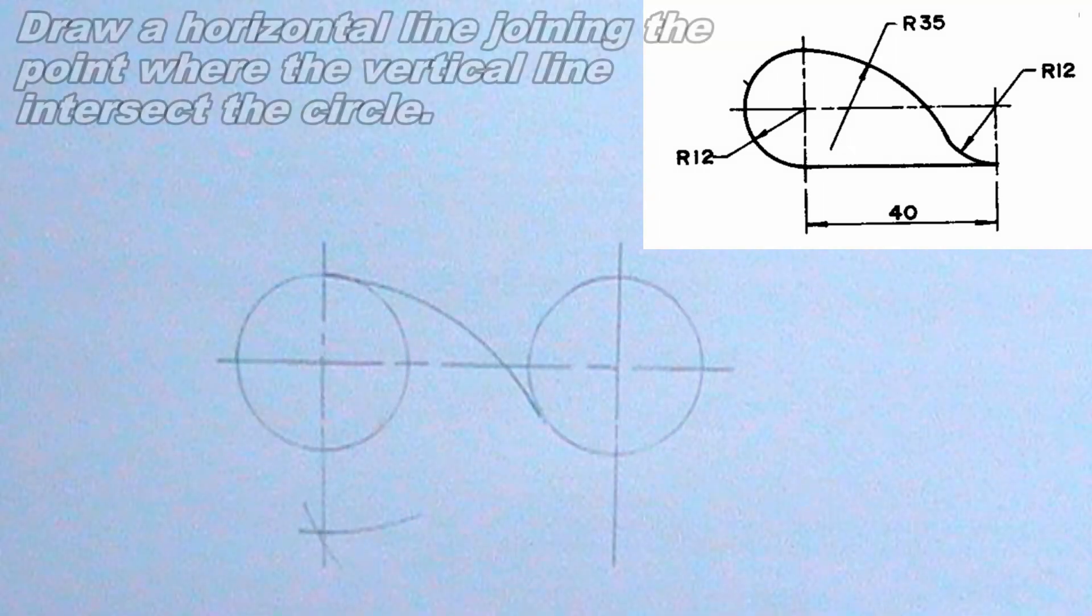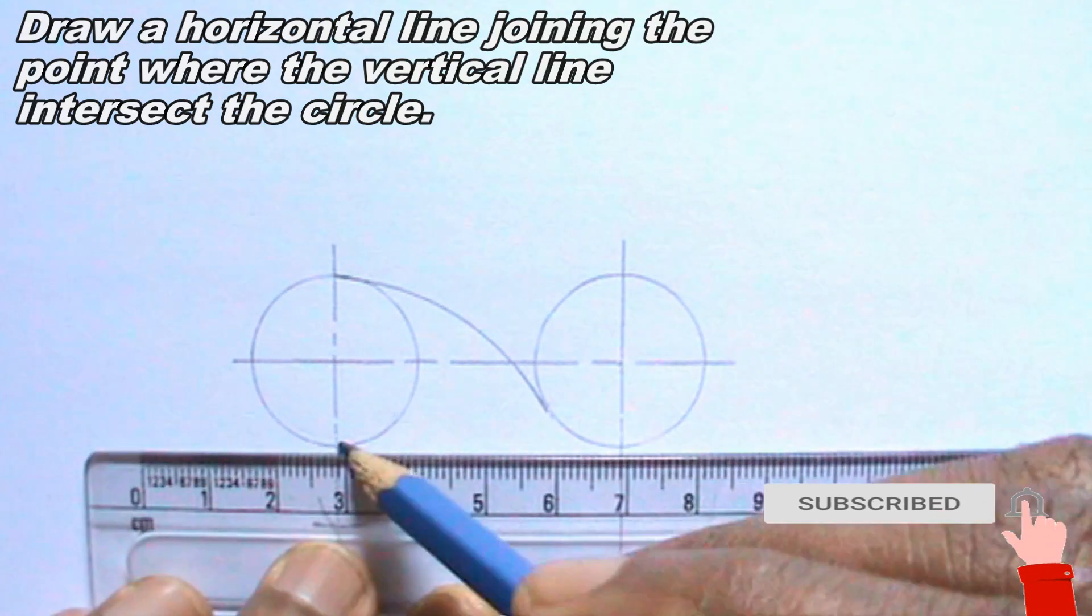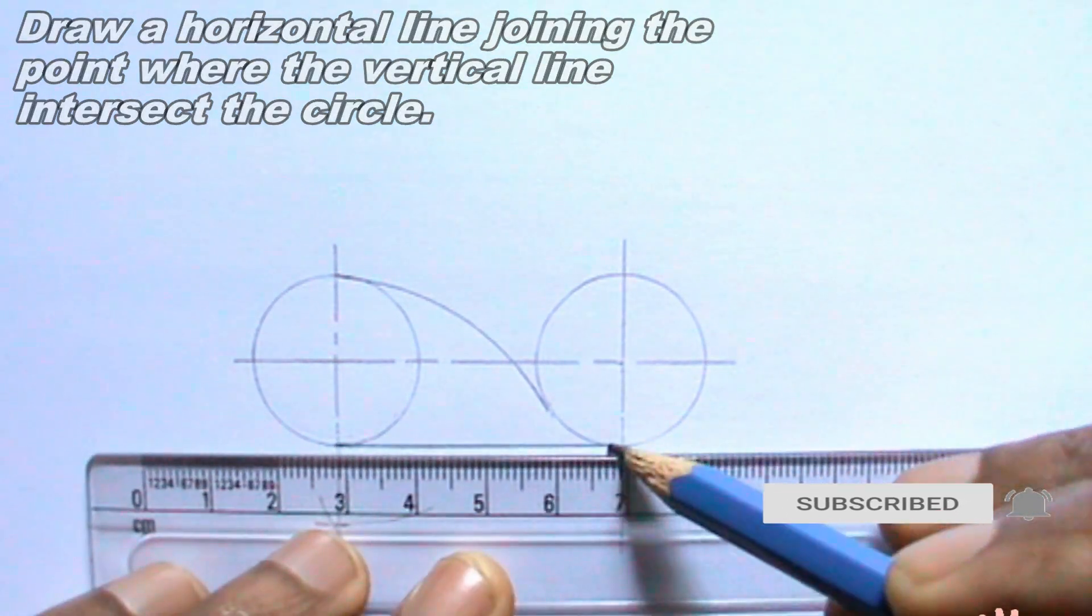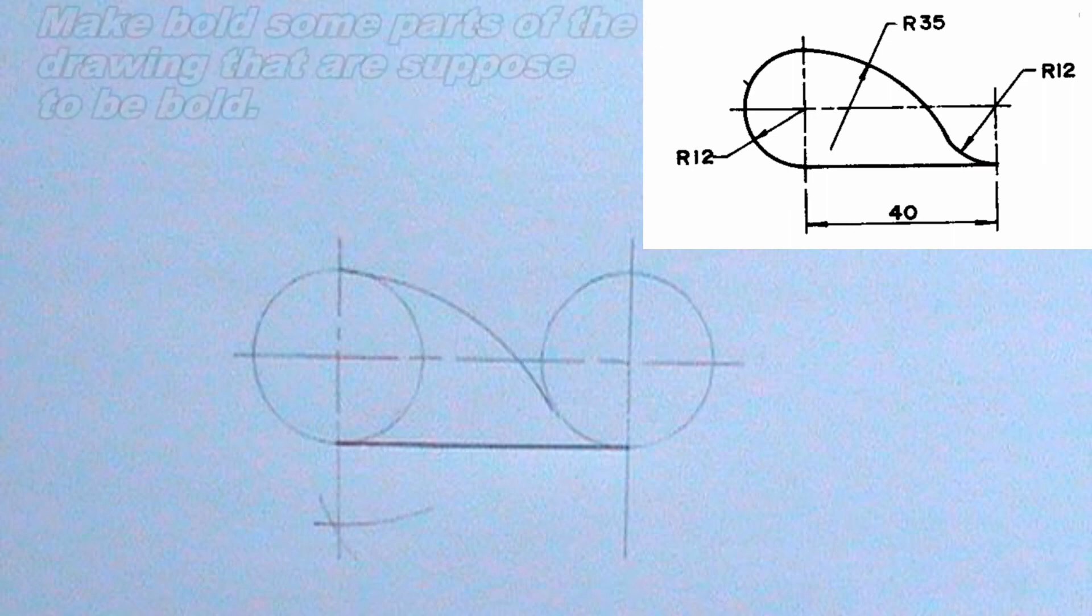Draw a horizontal line where the vertical line intersects the circles. This line should be a thick continuous line. I will make bold some parts of the drawing that are supposed to be bold.